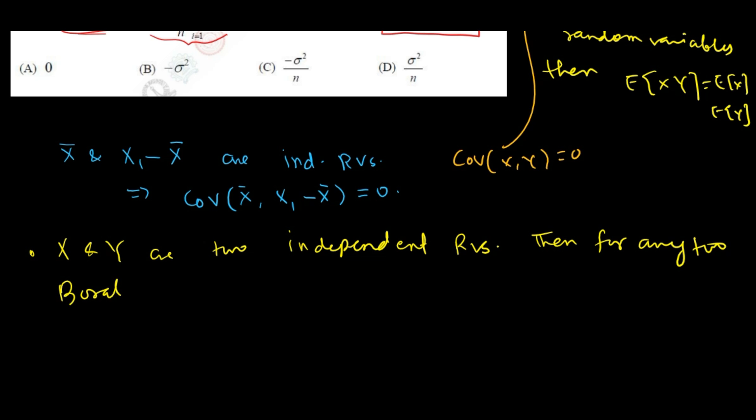then for any two Borel measurable functions f and g, f of x and g of y are independent random variables.